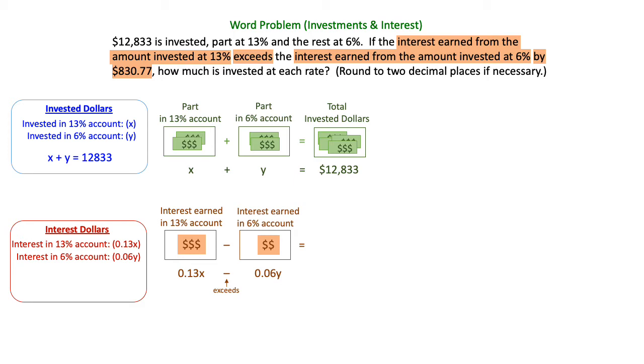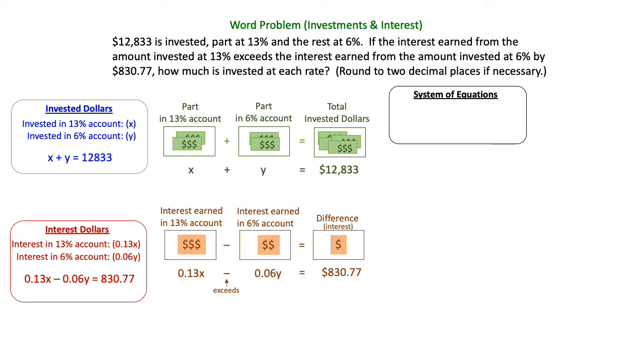And then the difference between those two accounts is $830.77. So our second equation is 0.13X minus 0.06Y equals 830.77. We now have a system of equations.